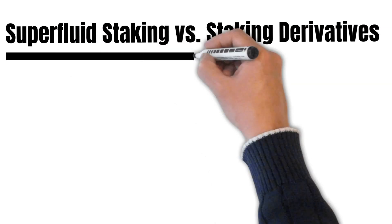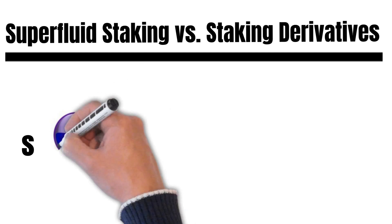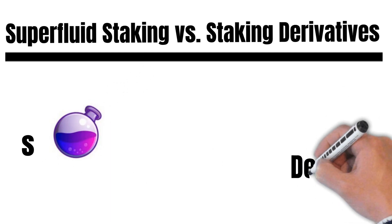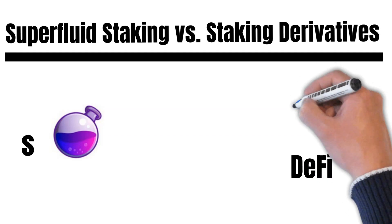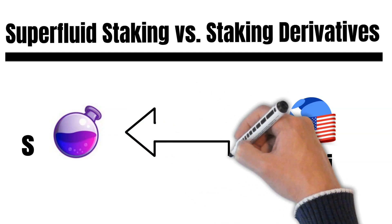Superfluid staking. To understand superfluid staking, you first have to understand staking derivatives and their problems. Let us assume you stake Osmosis. This stake position has an underlying value and produces daily rewards. So, this stake position has an economic value.